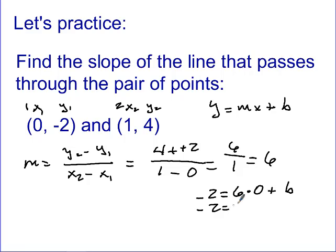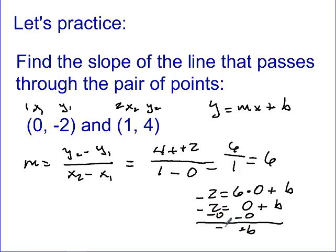So we have: negative 2 = 6 times 0 + B. That gives us negative 2 = 0 + B. What number do I need here to get negative 2? That tells us B = negative 2. You can also solve for B algebraically: subtract 0 from both sides, and you get B = negative 2. So our full equation is Y = 6x + (negative 2), which gives us the equation of the line passing through those two points.